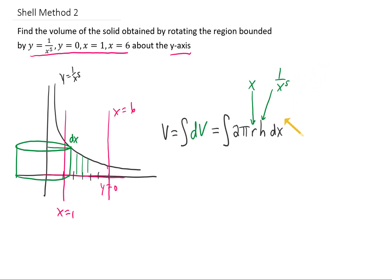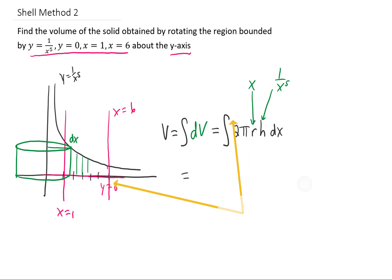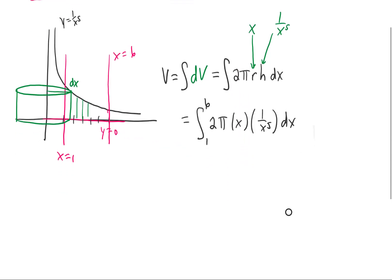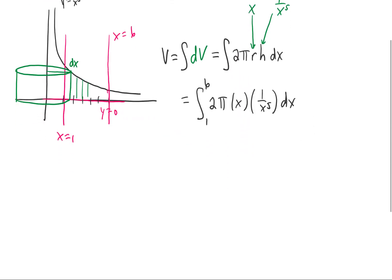We integrate with respect to x from the lowest value of x in the region, which is 1, to the largest value of 6. Let's simplify: x divided by x to the fifth is x to the negative 4.